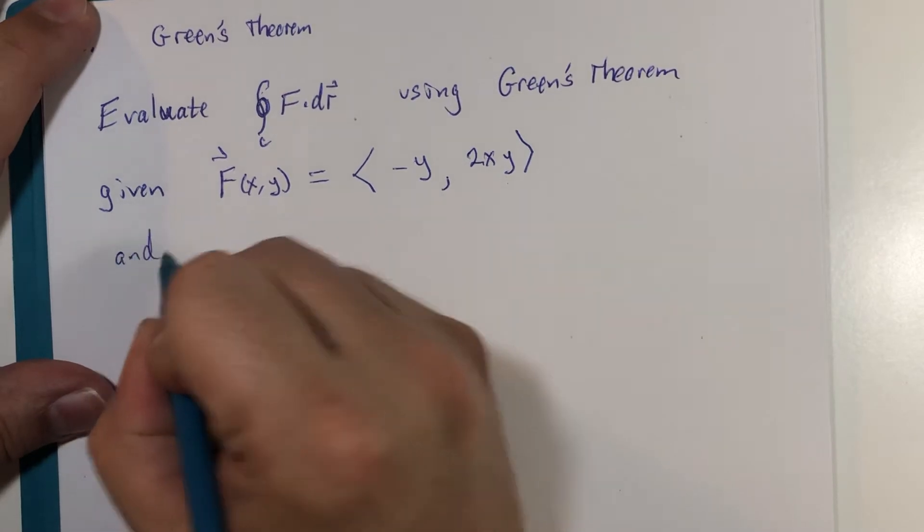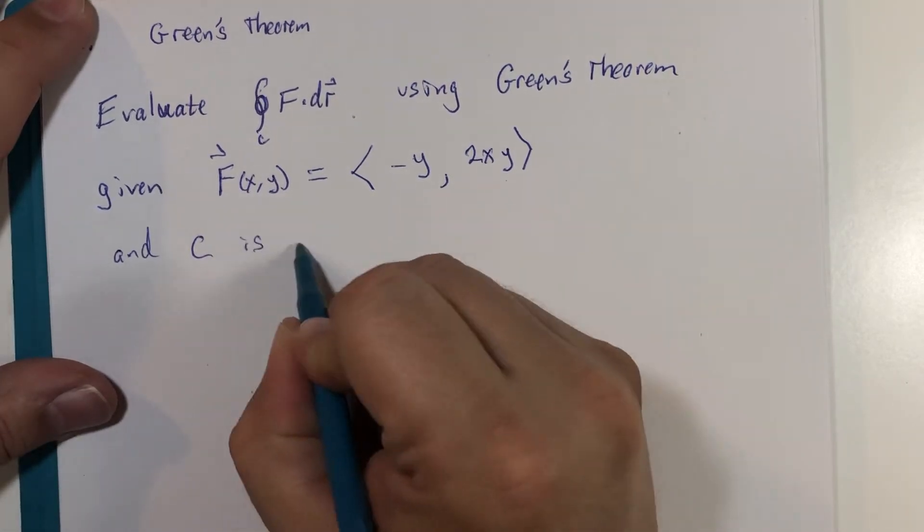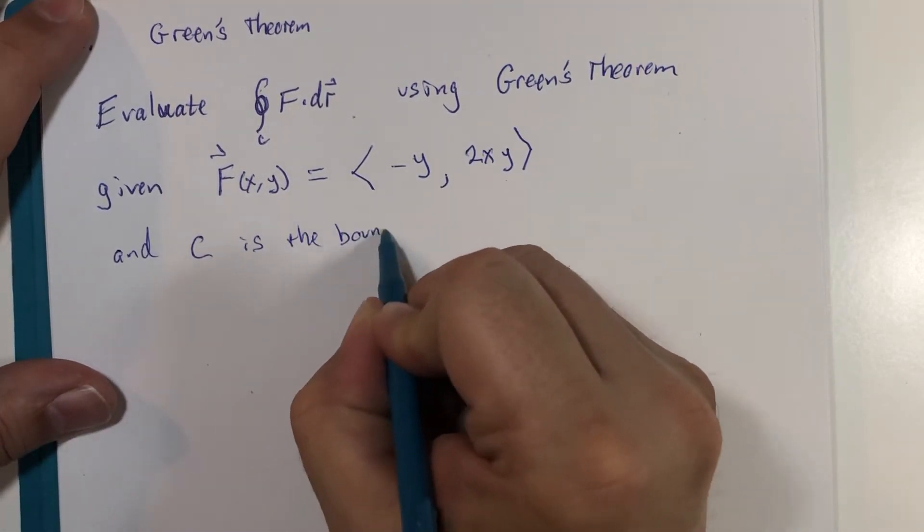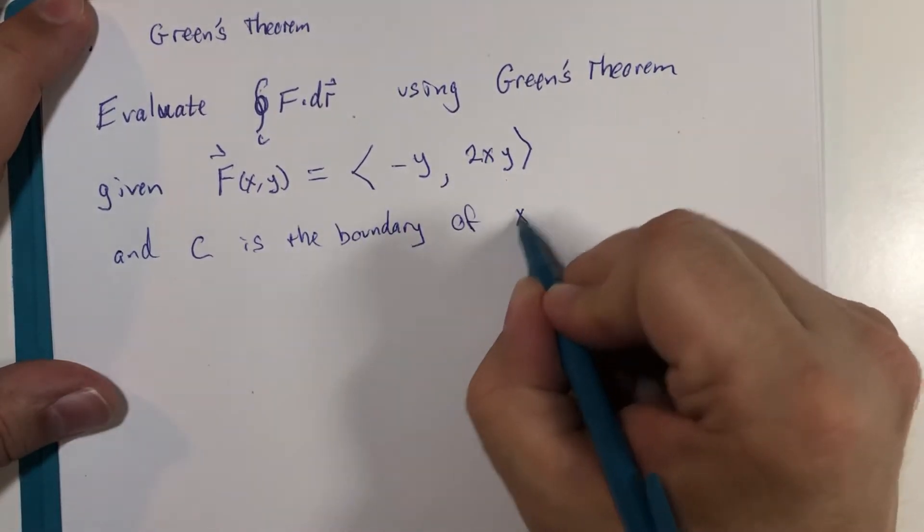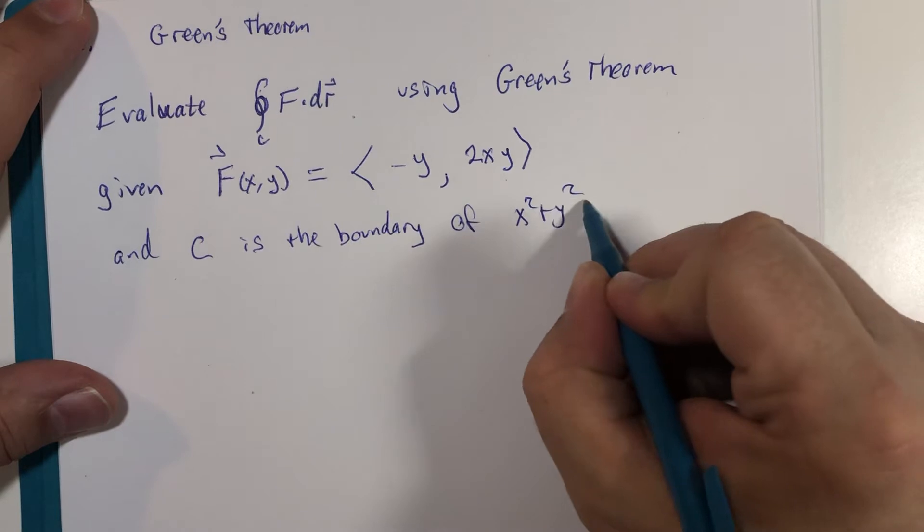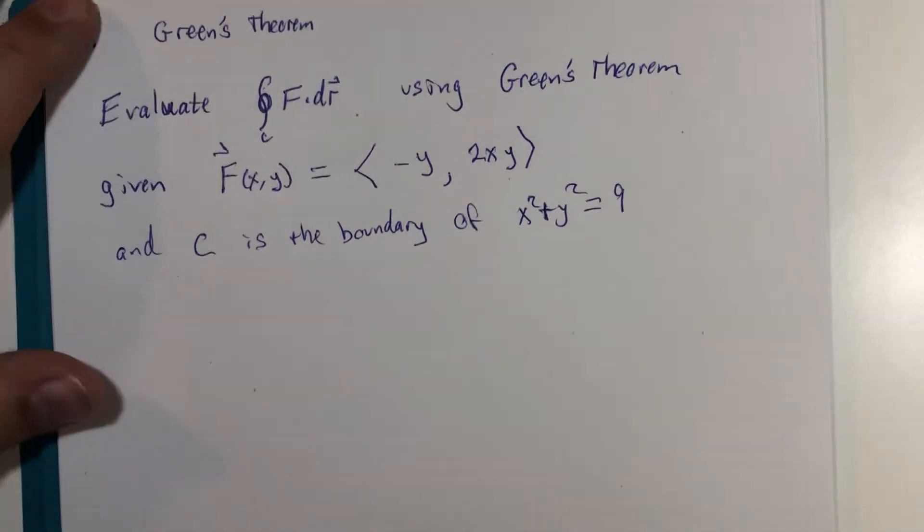And the C, the curve, or the path for this line integral, is the boundary of x squared plus y squared equals 9. The circle, radius 3.